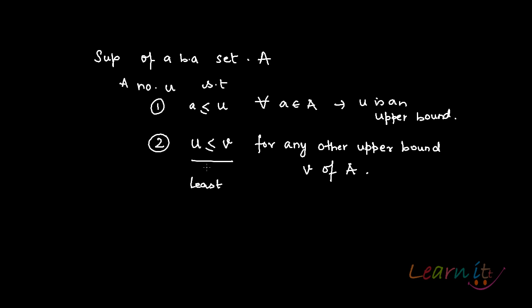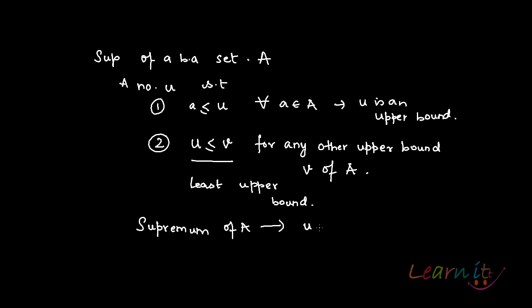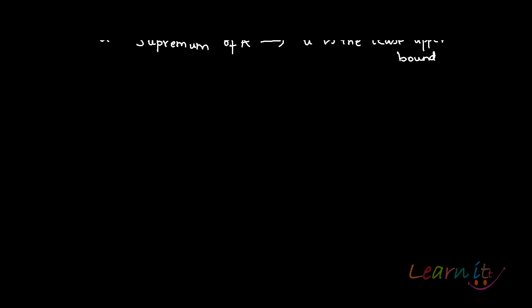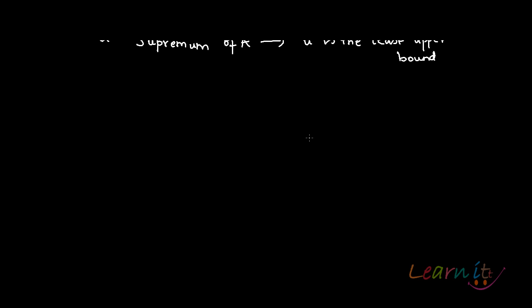This property tells us that in case there is any other upper bound apart from u — that is, for any v which is also an upper bound — then u needs to be less than or equal to that. That means u needs to be the least upper bound, and that is what supremum is.